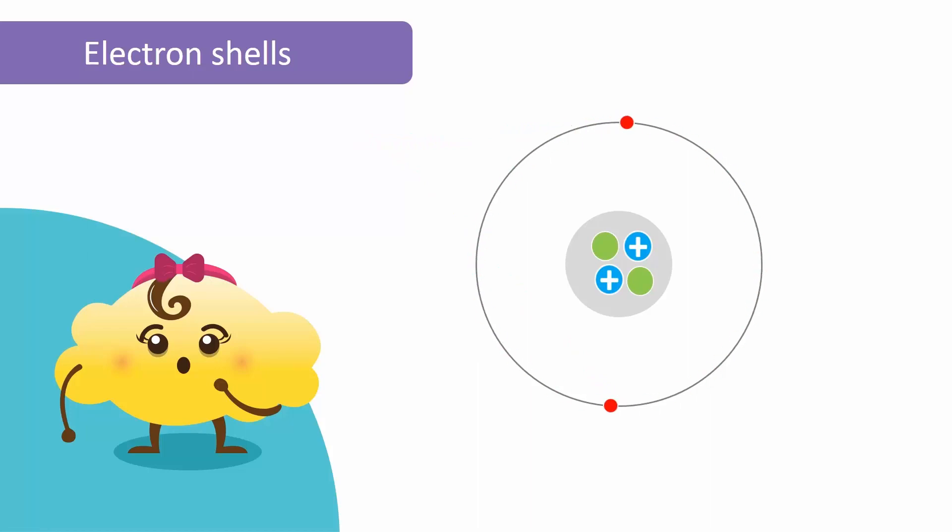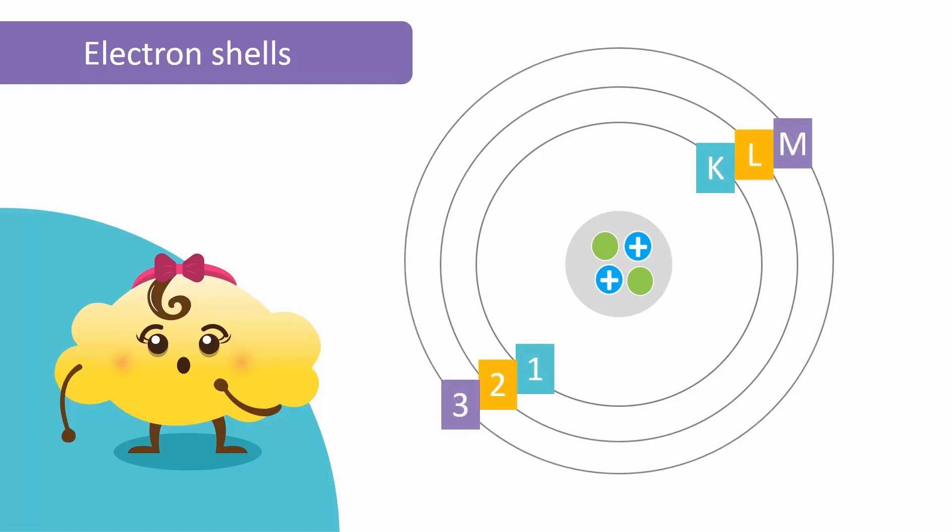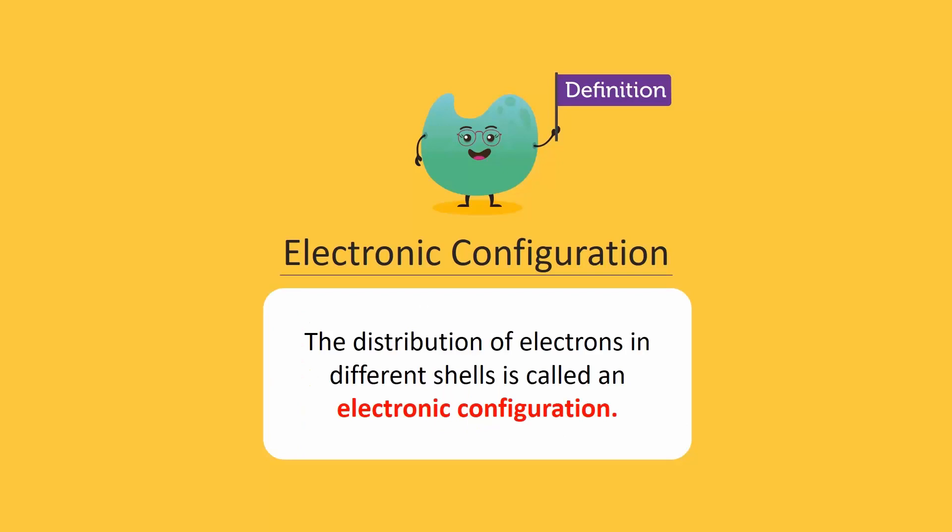Each shell has a name. The first shell, K, is closest to the nucleus. The second shell is L. The third shell is M and so on. The distribution of electrons in different shells is called an electronic configuration.